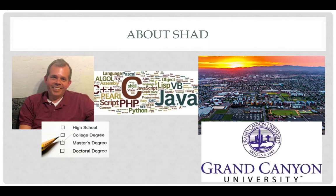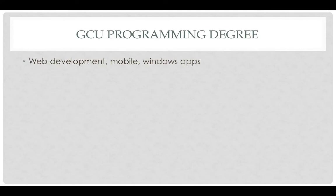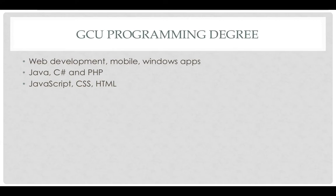Personally, I think Grand Canyon University is a great place to work and a great place to learn. Let's talk about the programming degree that you can get at GCU. We focus on web development, mobile, and Windows applications. The three languages you'll experience most in this program are Java, C Sharp, and PHP. And also, we'll talk about JavaScript, CSS, and HTML, and the libraries that go with those.